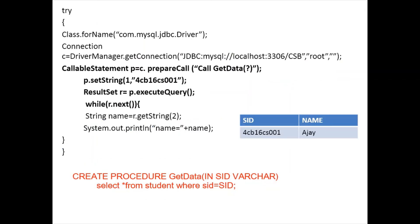In this slide we are discussing a stored procedure with a simple example written using Java code. The main aim of this code is to retrieve the student name based on the student ID. The procedure named 'get_data' takes one IN parameter — student ID of type VARCHAR — and executes the query SELECT * FROM student WHERE SID equals the argument. If the argument matches a value in the student table, the query returns the name of that student.